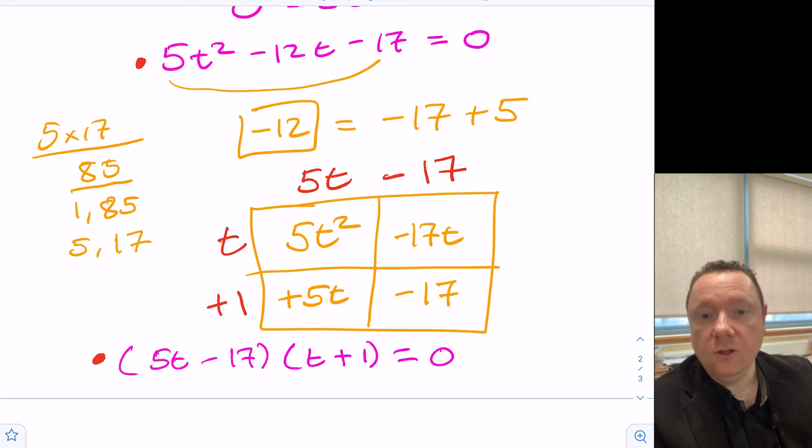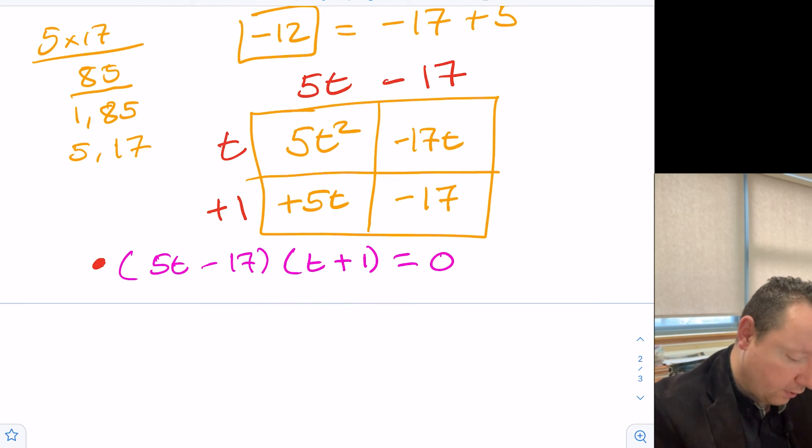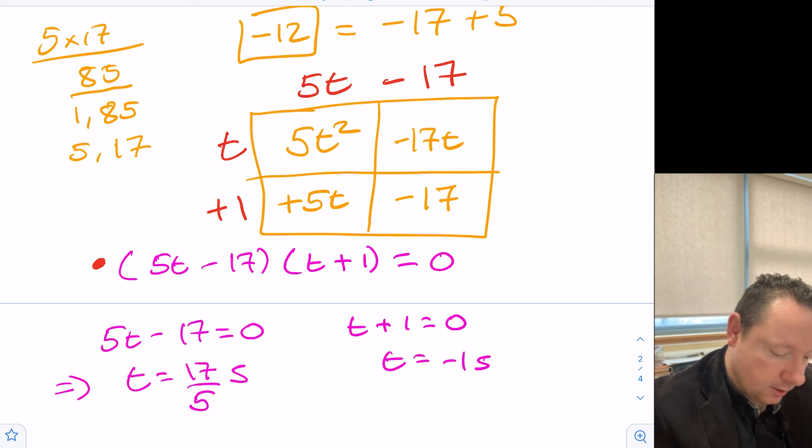The final thing to do is solve that and work out your t's. For the first one, from 5t - 17 = 0, that means t must be 17/5 seconds. And then the other one, t + 1 = 0, so t must be -1 seconds.